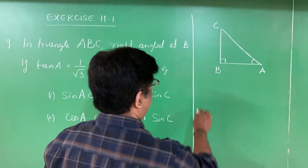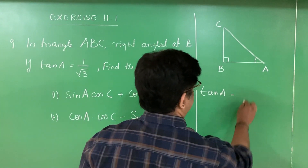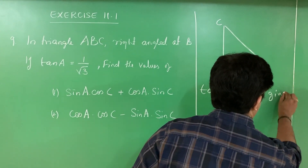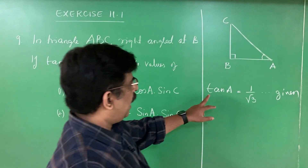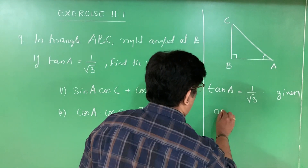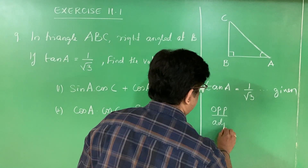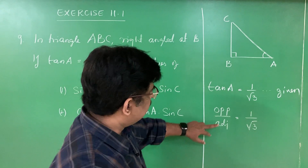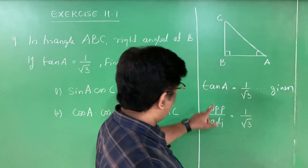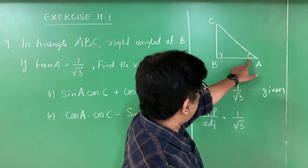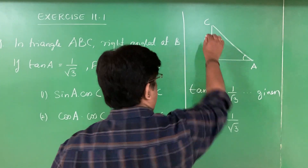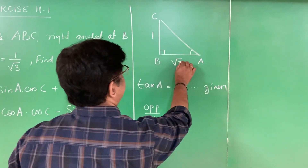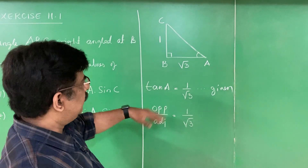Tan A is equal to 1 by root 3 — it is given in the problem. We know that tan theta is equal to opposite by adjacent. Opposite by adjacent is equal to 1 by root 3. Therefore substitute these values to the triangle. Opposite side to angle A is BC, that is equal to 1. Adjacent side to A is AB, that is root 3. I substituted the given values to the triangle.